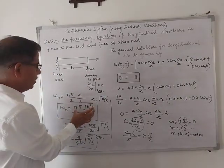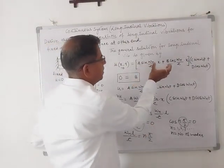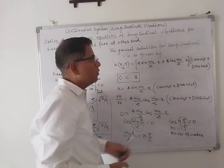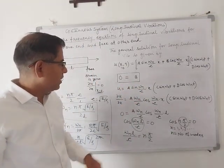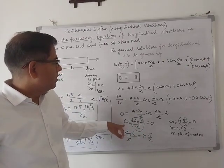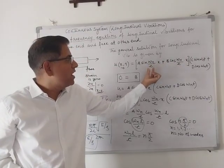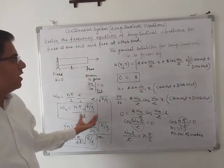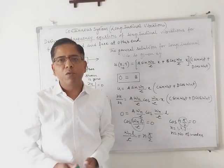You can put the value of omega_n in the general solution and find out the general solution equation as well, where the value of B will be zero. So thank you for watching.